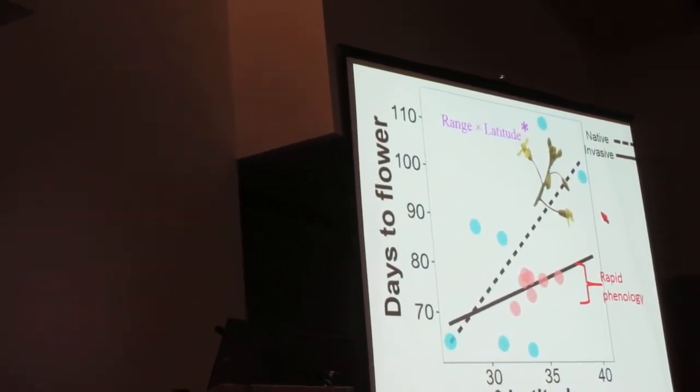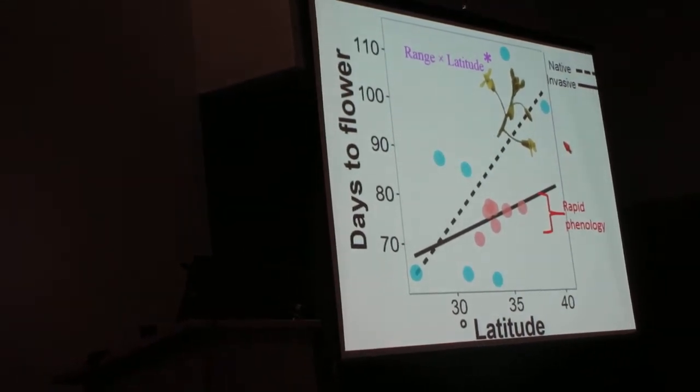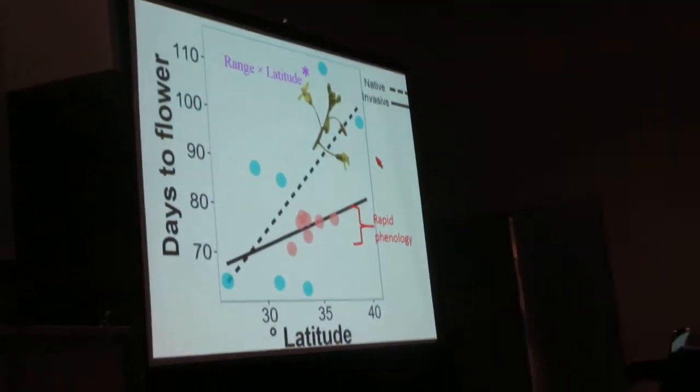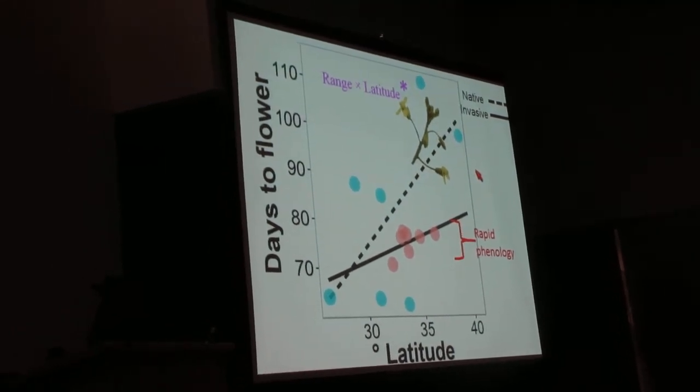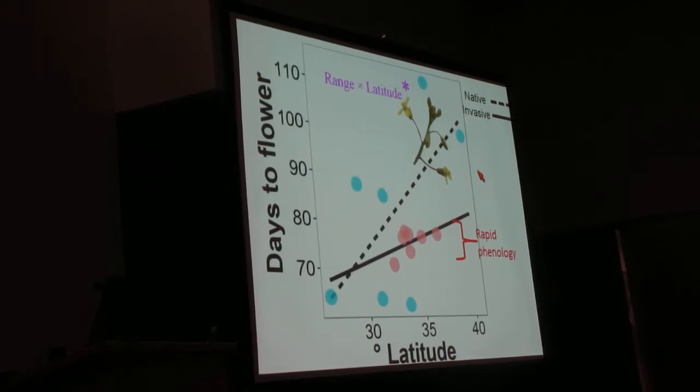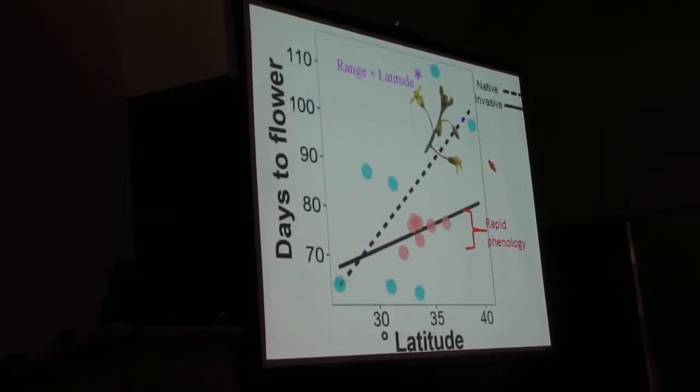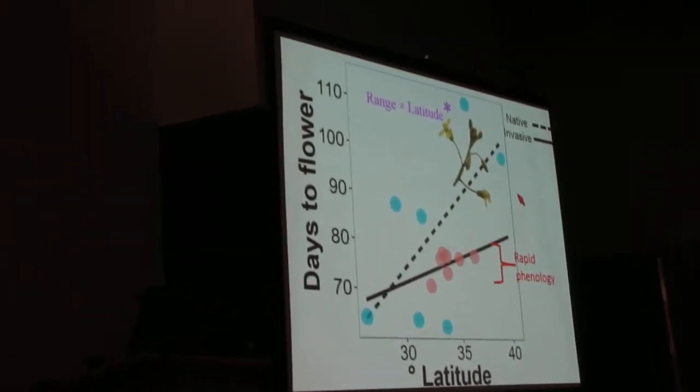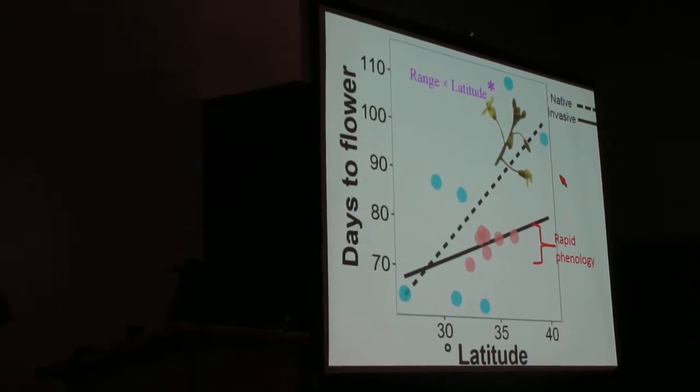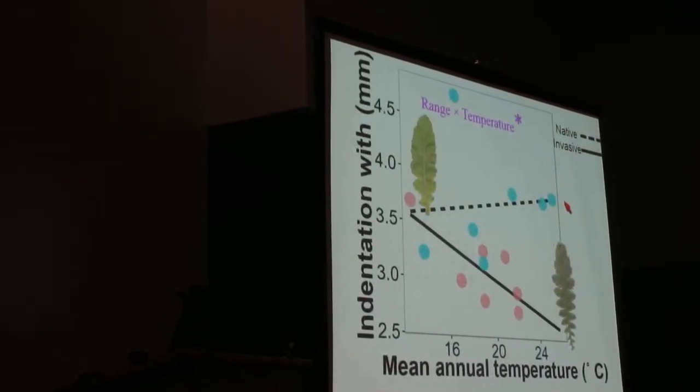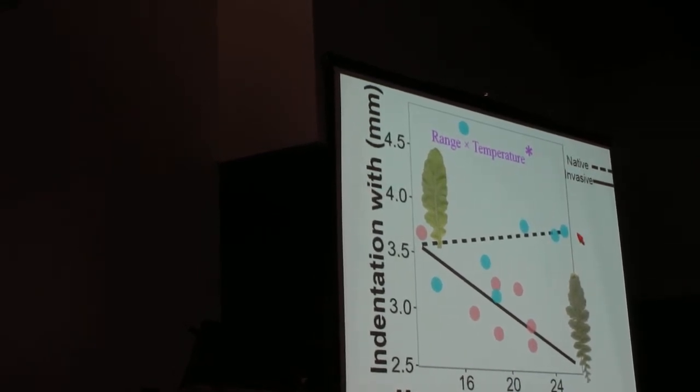For flowering phenology, I found that for all the environmental gradients that I ran these linear regressions with, I only found latitude to be the most significant factor, in that I saw these two trend lines increasing, but the slope for the invasive range is much less steep. I'm observing that there's really rapid phenology going on in the invasive range. That might be an important trait for this plant to be able to out-compete natives in the southwestern deserts.